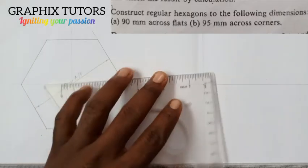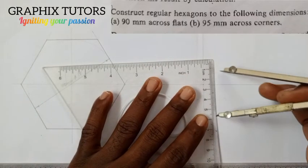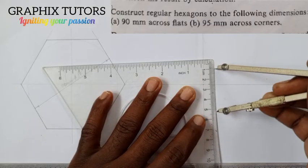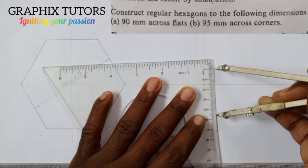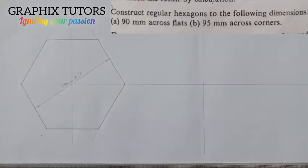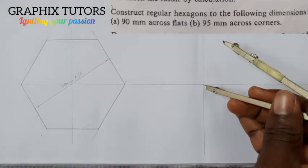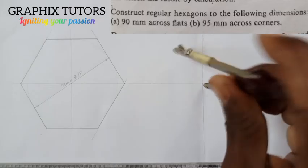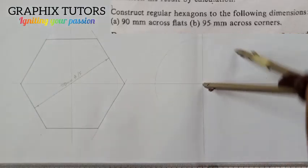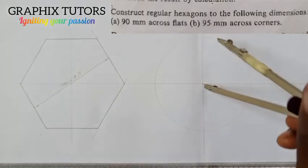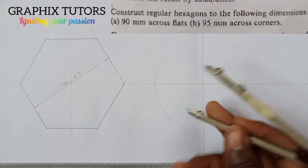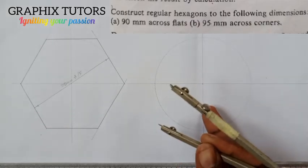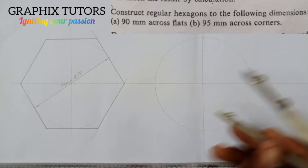You take half of 95, which is 47.5. From one to five is 40, and 45 is here, so 47.5 would be somewhere around here. Place the compass at the center where the lines meet and draw your circle.